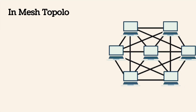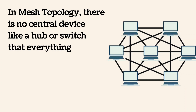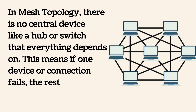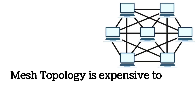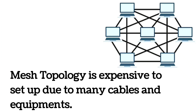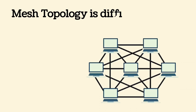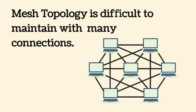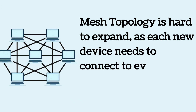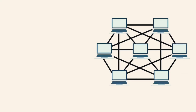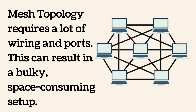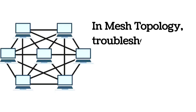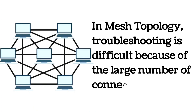In mesh topology, there is no central device like a hub or switch that everything depends on, so if one device or connection fails, the rest of the network can still work. Disadvantages: mesh topology is expensive to set up due to many cables and equipment; it is difficult to maintain with many connections; hard to expand as each new device needs to connect to every other device; requires a lot of wiring and ports resulting in a bulky, space-consuming setup; and troubleshooting is difficult because of the large number of connections.